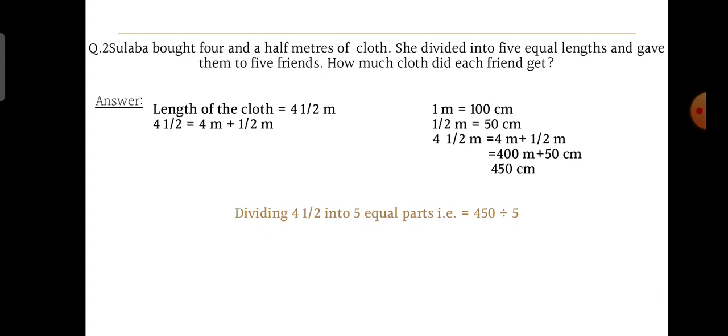Four and a half meters means four meters plus half a meter. We know that one meter equals 100 centimeters, and half a meter is 50 centimeters. So four meters equals 400 centimeters. Children, you have to write: 400 centimeters plus 50 centimeters equals 450 centimeters.